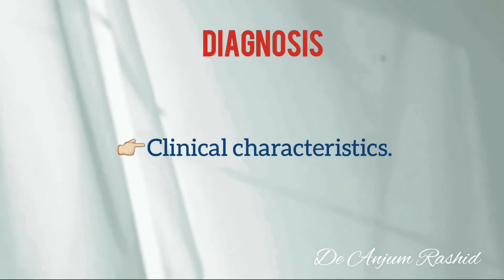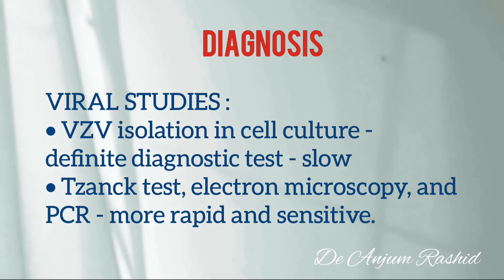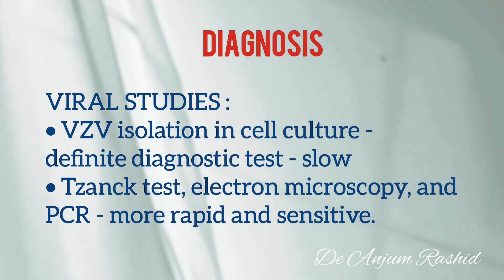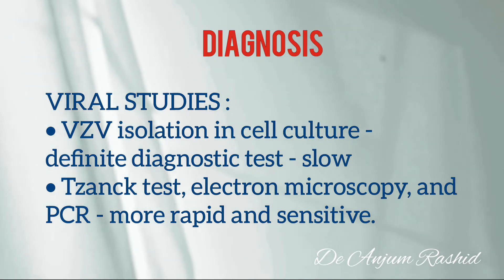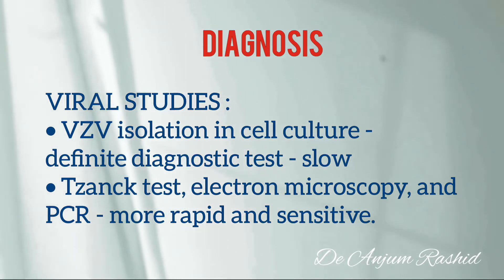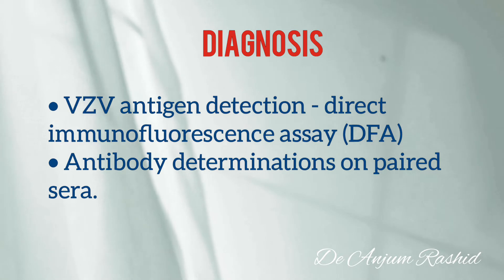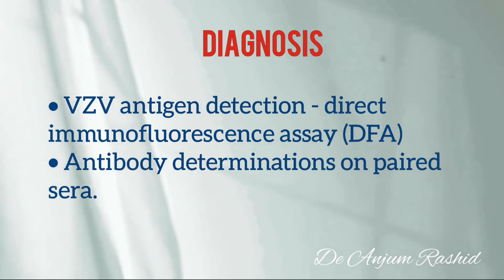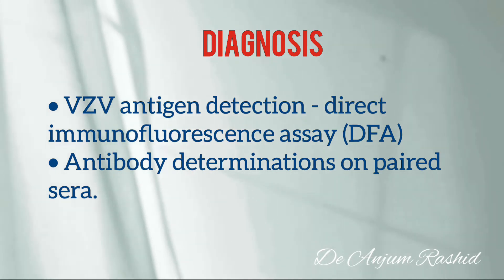The diagnosis of Ramsay Hunt Syndrome is usually made without difficulty when clinical characteristics are present. For viral studies, varicella zoster virus isolation in conventional cell culture is considered the definitive diagnostic test, however it is usually too slow to be clinically helpful. Other tests include the Tzanck test, electron microscopy, and PCR, which are more rapid and sensitive. VZV antigen detection by direct immunofluorescence assay (DFA) is also possible, and antibody determination on paired sera may help confirm the diagnosis.